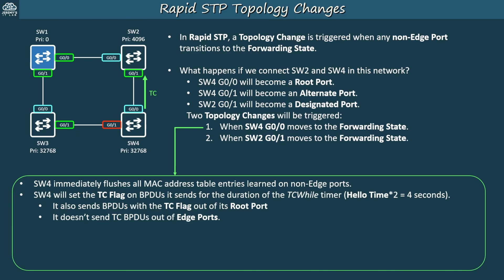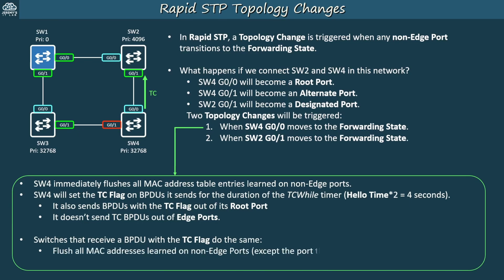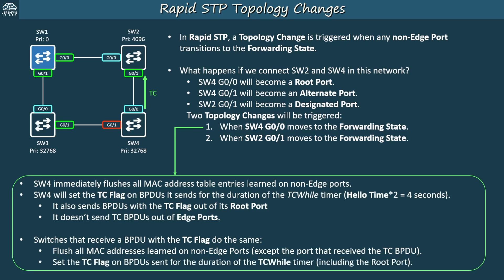SW2 received a TC BPDU from SW4 — what next? Switches that receive a BPDU with the TC flag do the same: they immediately flush all MAC address table entries learned on non-edge ports, except the port that received the TC BPDU. For example, SW2 won't flush MAC addresses learned on G01, since it received the TC BPDU from SW4. Then, these switches also set the TC flag on BPDUs sent for the duration of the TC while timer, and this includes the root port but not edge ports. So the topology change information will flood throughout the LAN.